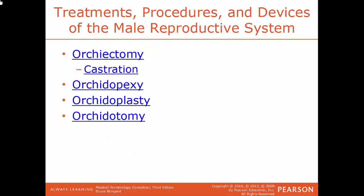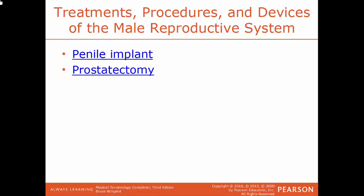Orchiectomy is the surgical removal of one or both testes — another term is castration. Orchidopexy is a procedure to remove an undescended testis and fixate it into place. Orchidoplasty is the surgical repair of a testis, requiring an orchidotomy — cutting into the testis. A penile implant is where a prosthesis is inserted into the penis, usually done for males with erectile dysfunction. Prostatectomy is the surgical removal of the prostate gland.